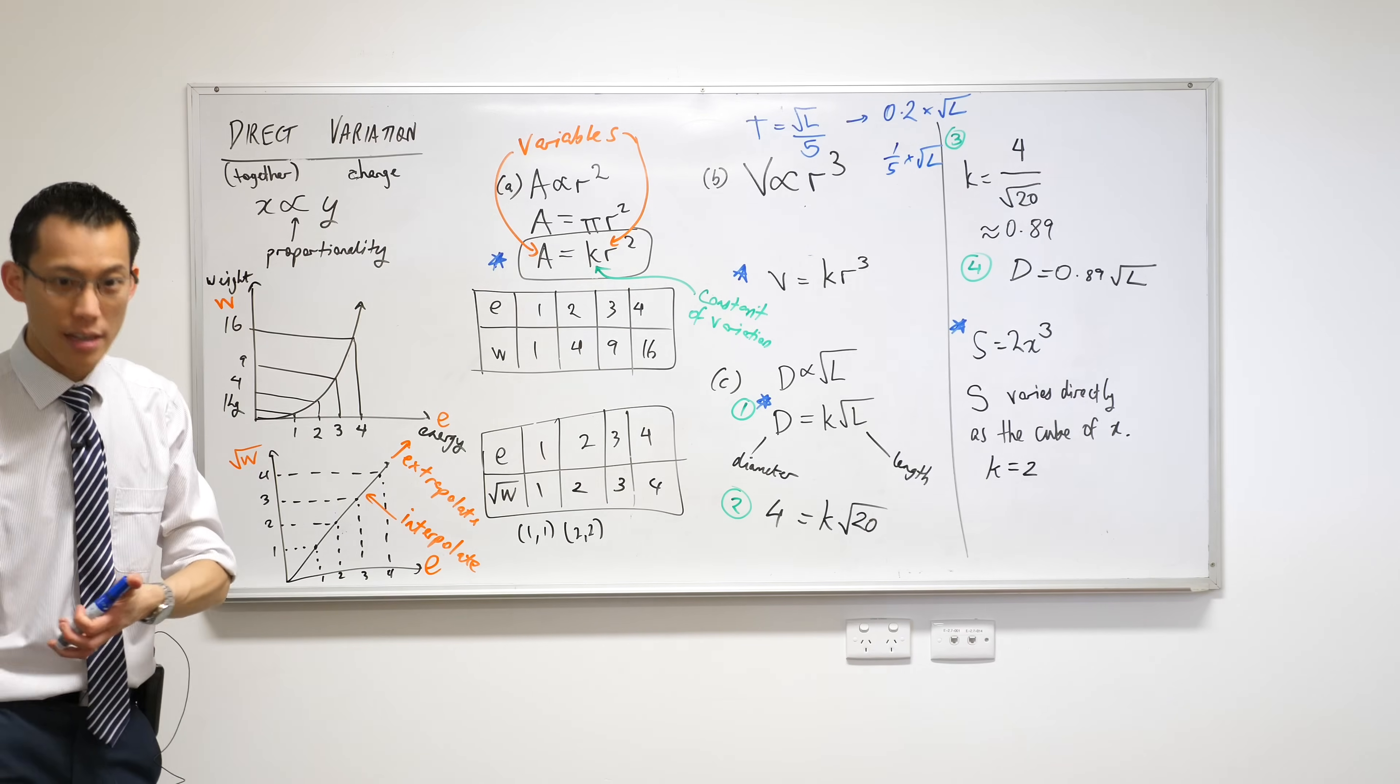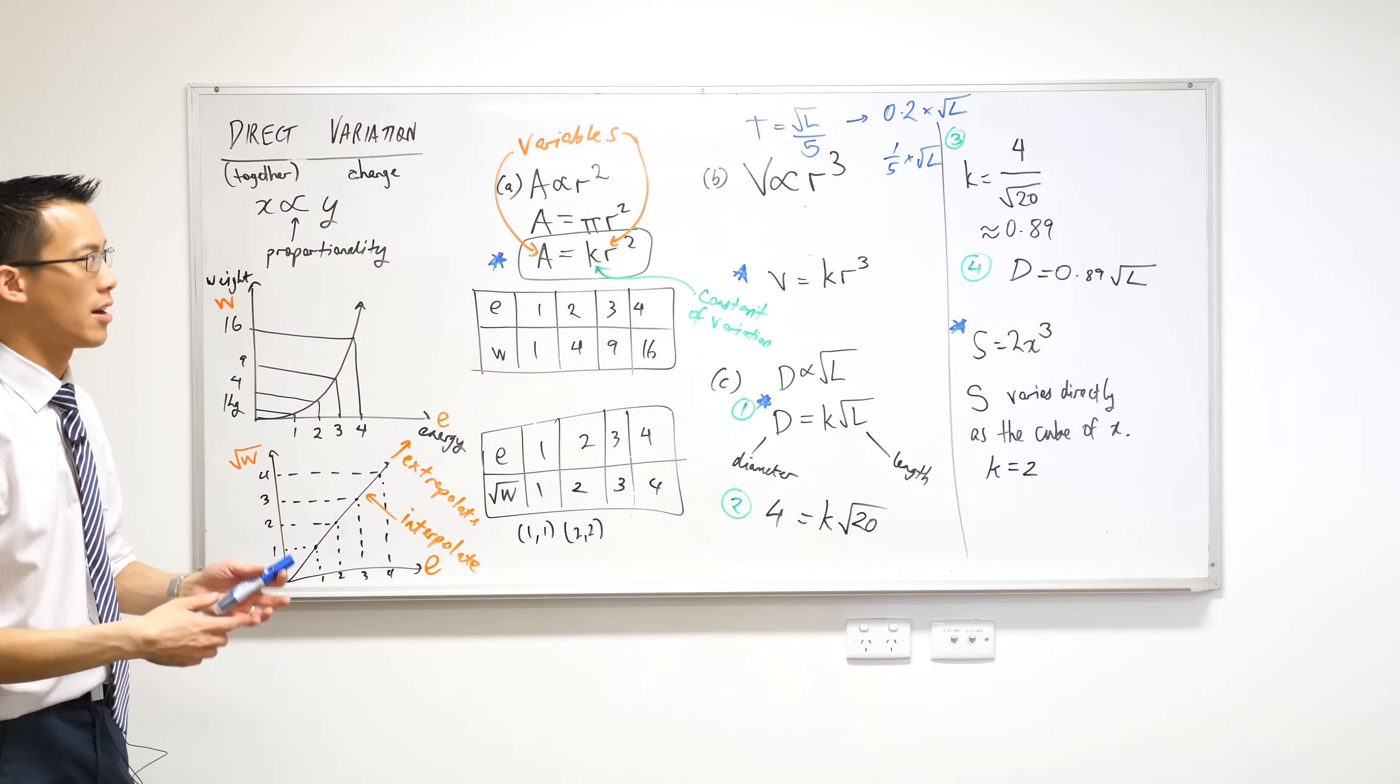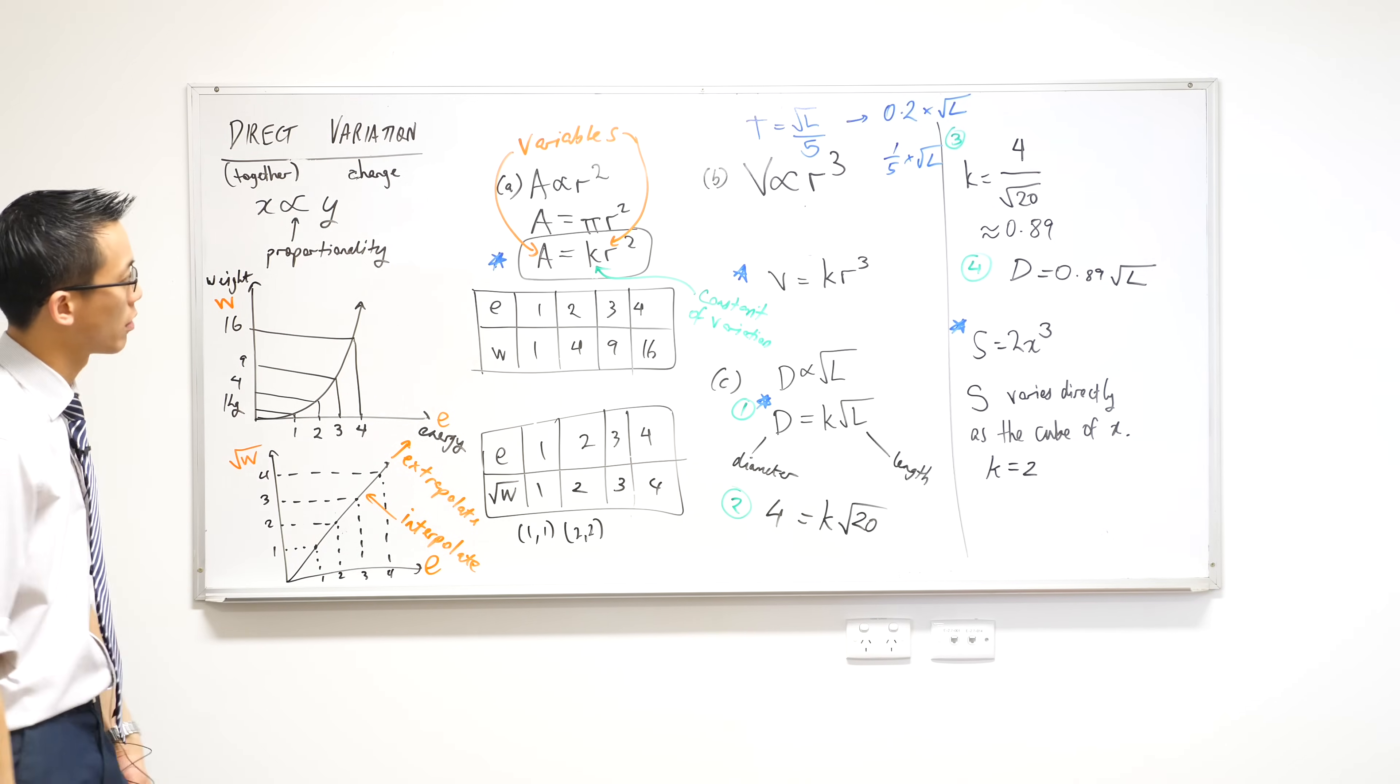So in this case, K is not five. K is one over five. And that's what gives the fraction. Okay.